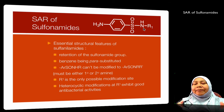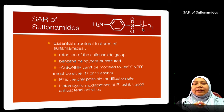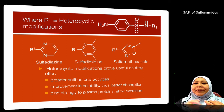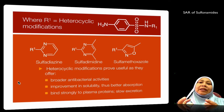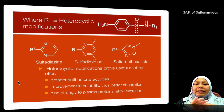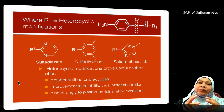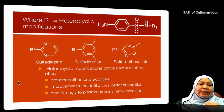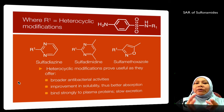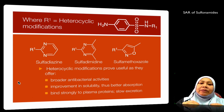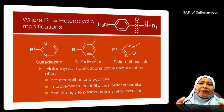Examples of R-group modifications include sulfadiazine, sulfadimidine, and sulfamethoxazole. These heterocyclic modifications give broader antibacterial activities. They also improve the solubility of the drugs, therefore leading to better absorption. These drugs can also bind strongly to plasma proteins due to ionic interactions, resulting in slow excretion of the drugs.